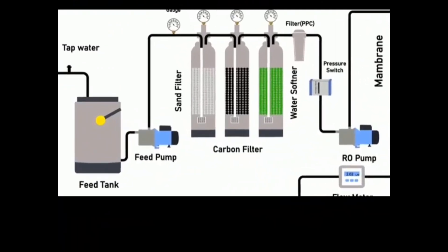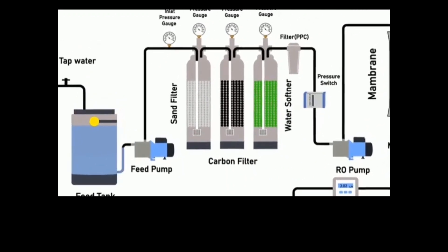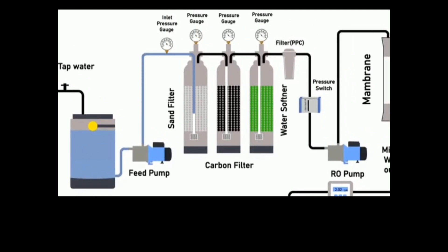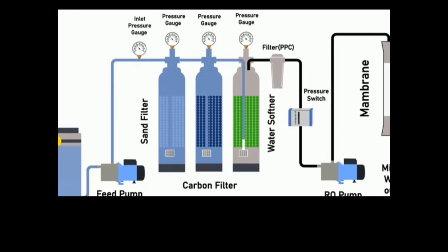This is the working principle of reverse osmosis in a water plant. The feed tank is filled with tap water. A feed pump transfers water from the feed tank to the sand filter, where all particles are removed from the tap water. Water travels upward through the sand and goes to the carbon filter, where all particles are separated and odor and color from the water are removed. Water then moves through the carbon filter and goes to the water softener. The water softener tank separates the salt and makes the water soft so that it can be used for washing and drinking purposes.